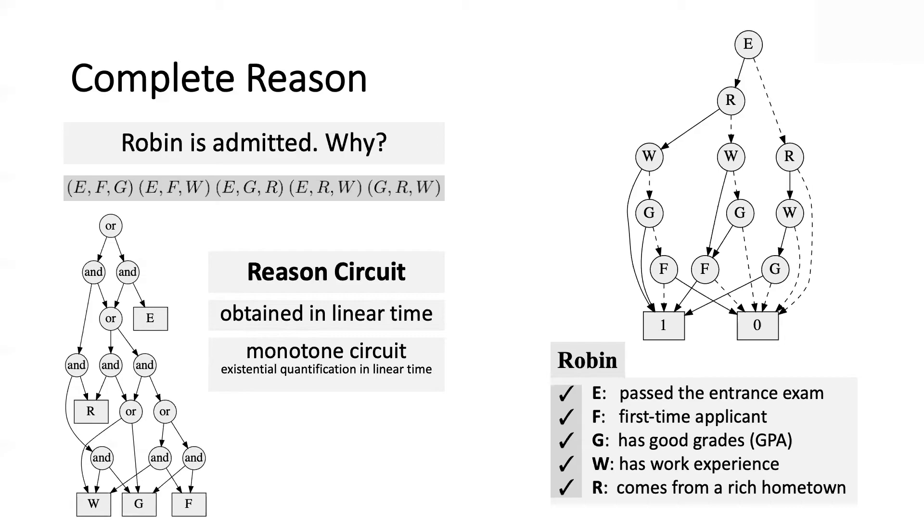So if we try to check decision bias based on the circuit, we will actually find that this decision is not biased. And you can see that by looking at the sufficient reasons explicitly and realizing that the protected feature appears in only three of them, but not all of them. And the theorem says the protected feature must appear in all of them for the decision to be biased.